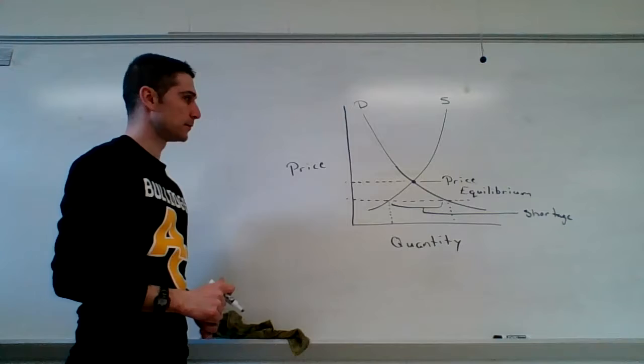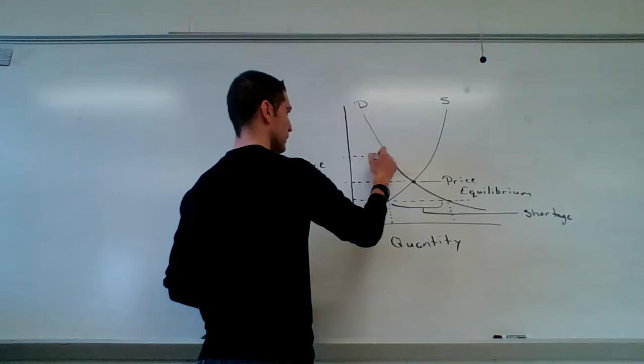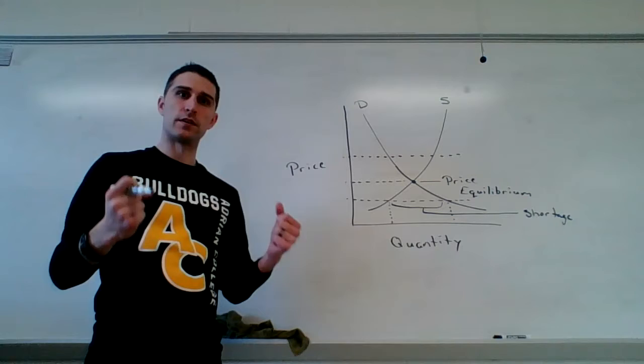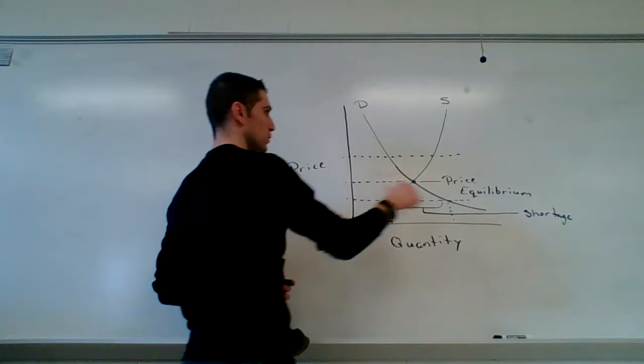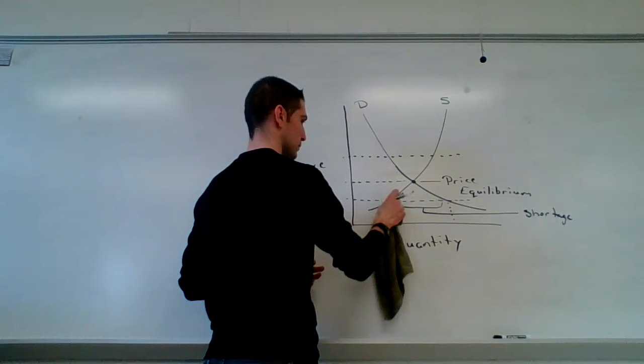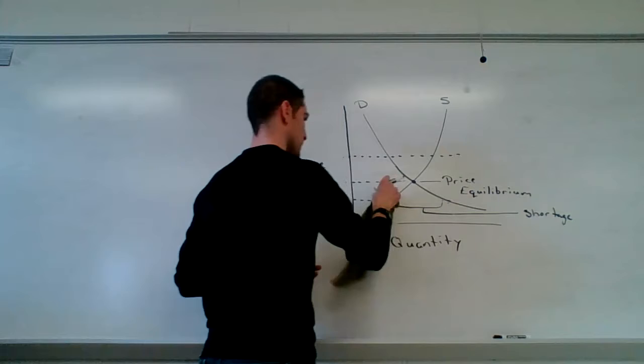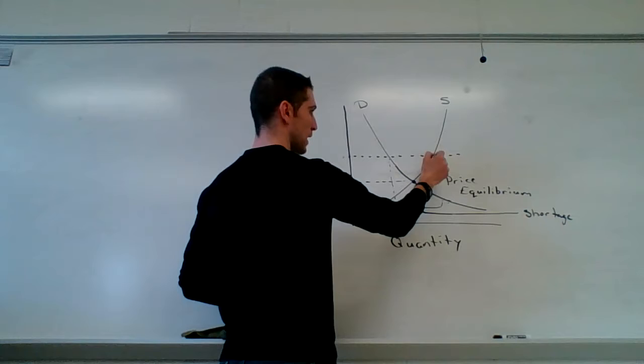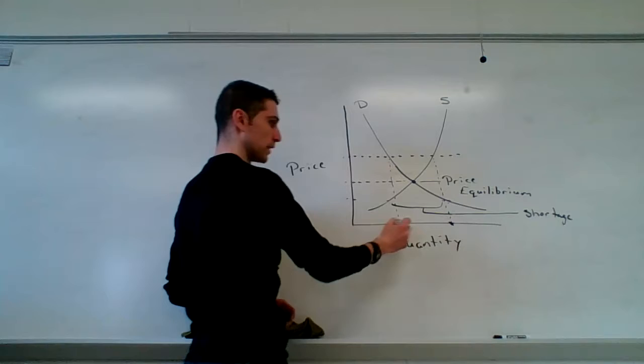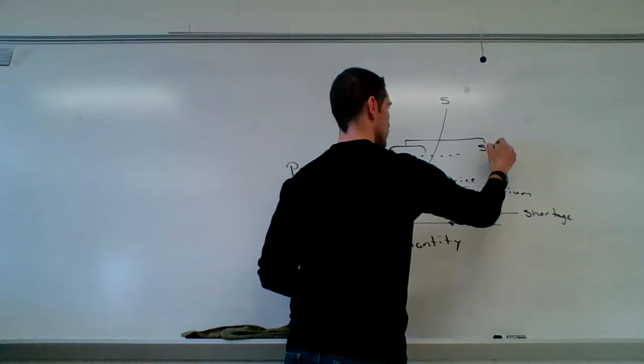Now, what if the business sets the price too high? Let's say they set it up here. If the price of something is that high, businesses are like, man, I'm going to sell this like crazy because I'm going to make money off of it. But people think, oh, I'm not willing to pay that price. And so, what you end up with is a quantity demanded that is way back here, but a quantity supplied that is way over here. In this case, your quantity supplied is considerably higher than your quantity demanded. This one is called a surplus.